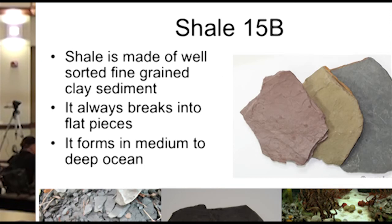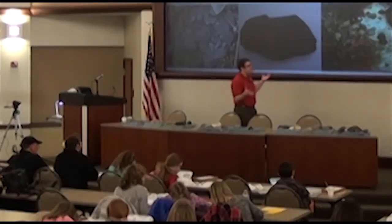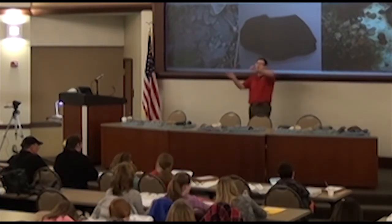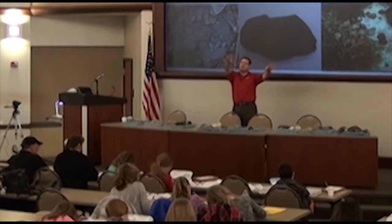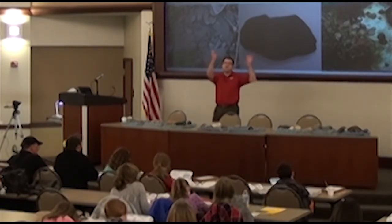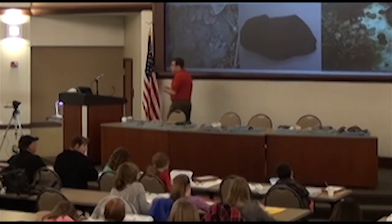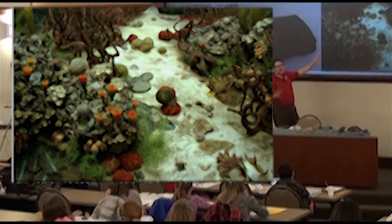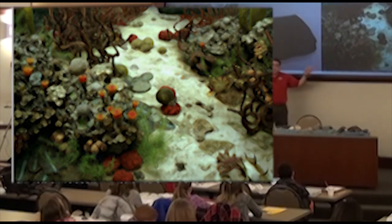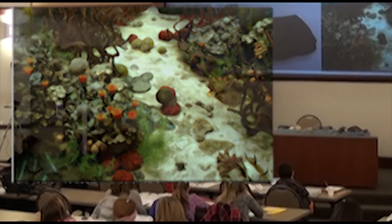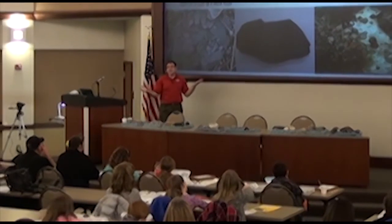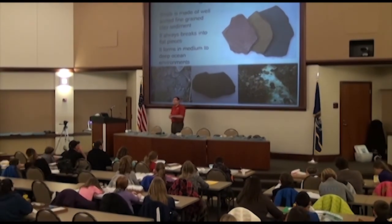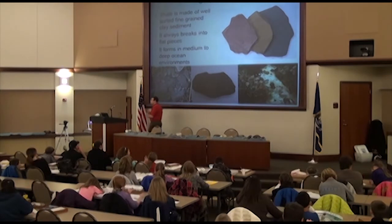Shale forms in pretty deep ocean — the waves have to carry those very fine particles out into the ocean without them dropping by the shore, so they fall down to the bottom of the deep ocean. This is from the University of Michigan Field Museum — a diorama of Devonian Michigan. Back in the Devonian, a long time ago, there was a lot of shale and limestone being formed here in Michigan. This was a reef, and you can find trilobites, brachiopods, and lots of cool fossils from the Devonian, some of which would be in shale.